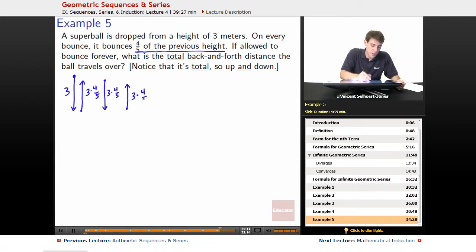Three times four-fifths times four-fifths, well, we could just write that as three times four-fifths squared. Then it's going to fall down once again from that same height, so three times four-fifths squared.